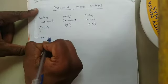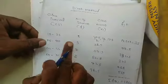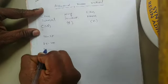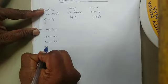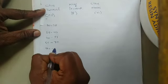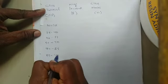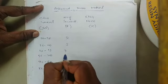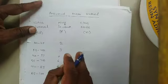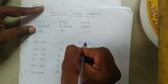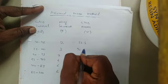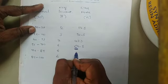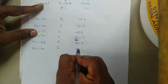The class intervals are: 10–25, 25–40, 40–55, 55–70, 70–85, and 85–100. The number of students are 2, 3, 7, 6, 6, and 6. The class marks are 17.5, 32.5, 47.5, 62.5, 77.5, and 92.5.